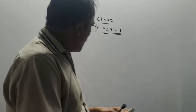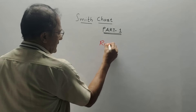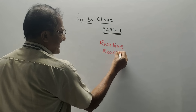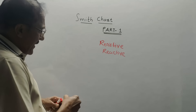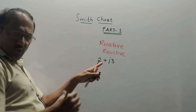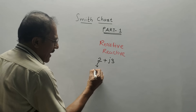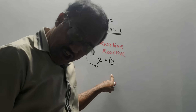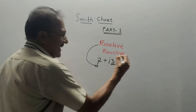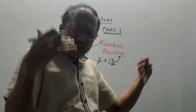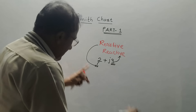What is a Smith Chart? It is a different kind of graph which contains resistive circles and reactive circles. For example, if I write a value like 2 plus j3, the real part which is 2 is known as the resistive part, and the term associated with j is known as the reactive part — so 3 is the reactive part. It can be 2 plus j3 or 2 minus j3.